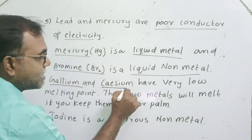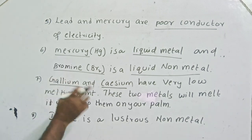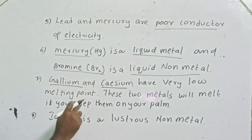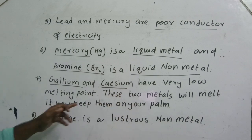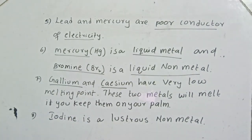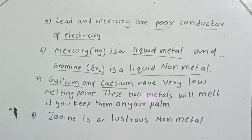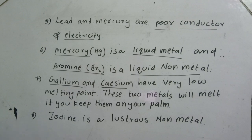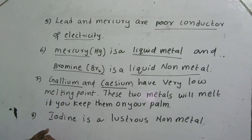Gallium and caesium have very low melting points. These two metals will melt if you keep them on your palm. Generally metals have high melting points, but gallium and caesium have very low melting points — their melting point is lower than your body temperature, so they start melting when kept on your palm.